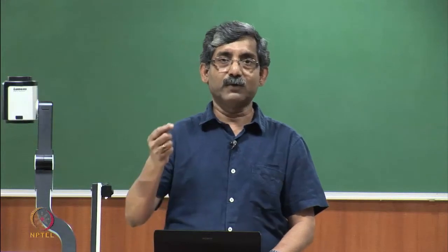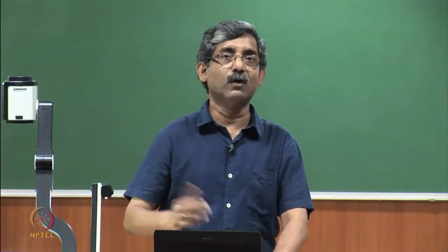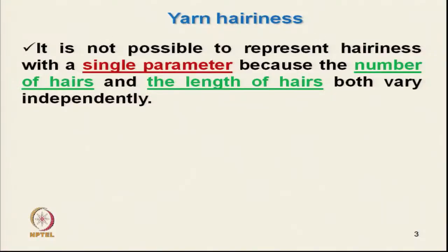It can be the number of hairs per unit length of yarn, or it can be the total length of hair protruding beyond the yarn surface. It is not possible to represent hairiness with a single parameter, because the number of hairs and the length of hairs both vary independently — they are not dependent on each other.